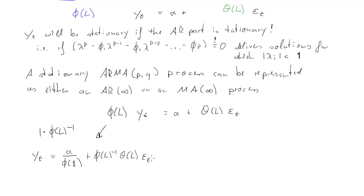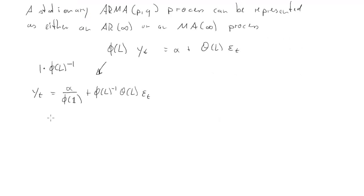Then we get phi(L) inverse times theta(L) times epsilon_t. This is now a rather complicated product. On the right-hand side, we have basically the multiplication of two lag polynomials, and what we get here is basically just another infinite lag. Since these are lags of the epsilon_t's, it's going to be an infinite MA process.